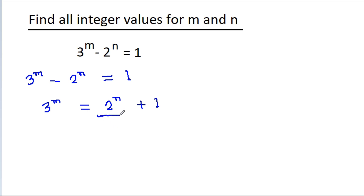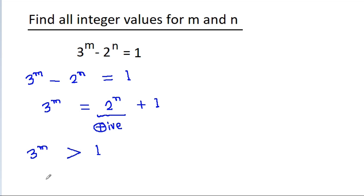Since 2^n will be positive, that means 3^m will be greater than 1. So m cannot be 0 or negative, and since m is an integer, m will be greater than or equal to 1.